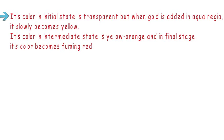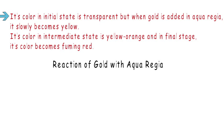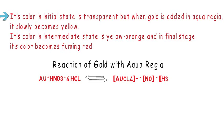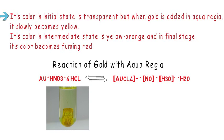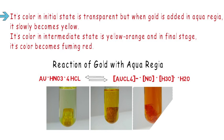Let's see the reaction of gold with aqua regia. Gold + aqua regia → AuCl4⁻ (tetrachloroaurate ion, aqueous) + NO (nitric oxide, gas) + H3O⁺ (hydronium, aqueous) + H2O (liquid). You can see the color is changing in different states.